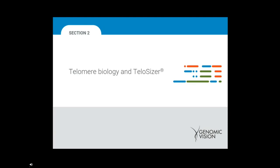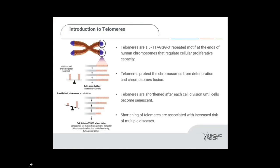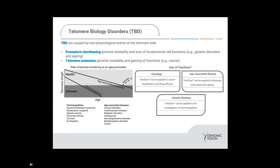The second part of today's webinar is all about telomere biology and our new Telosizer product. Telomeres are a five-prime to three-prime repeated motif of TTA-GGG at the ends of human chromosomes that regulate cellular proliferative capacity. Telomeres essentially protect the chromosomes from deterioration and fusion. Over time, telomeres are shortened after each cell division until the cells become senescent, and shortening of telomeres is generally associated with an increased risk of multiple diseases. There are numerous telomere biology disorders, TBDs, caused by non-physiological events at the site of the telomere.